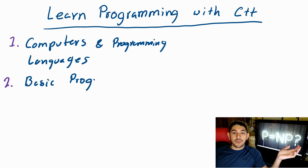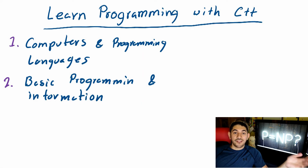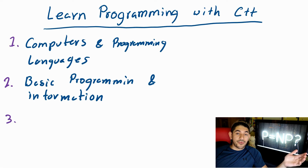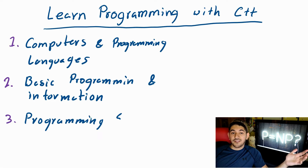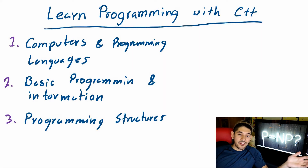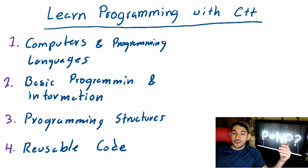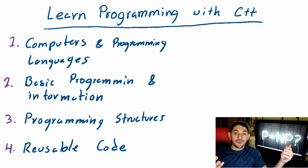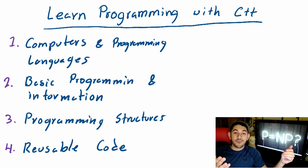Then we'll go to basic programming — how do we handle information, and how does the computer represent information inside of the computer? Then we'll talk about programming structures, which are the fundamentals to any kind of programming that we do. Then we'll go to reusable code. You write a piece of software, and perhaps you would like to use it again in the future or give it to someone so they can use it as part of their project.